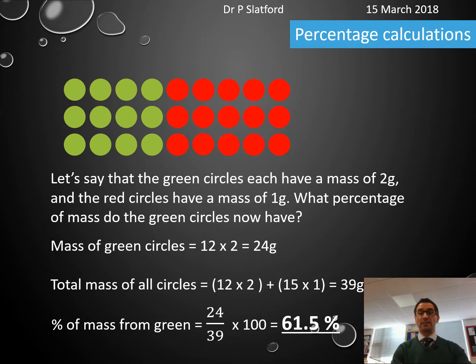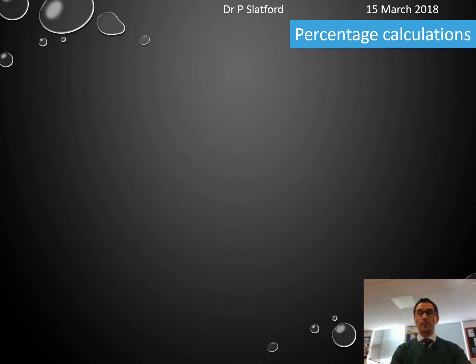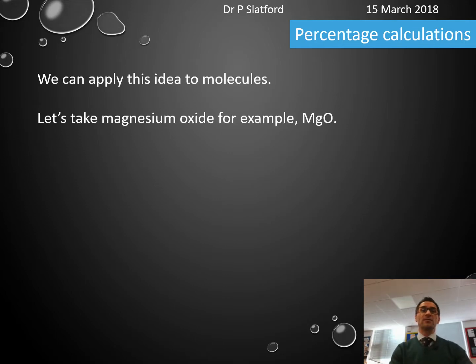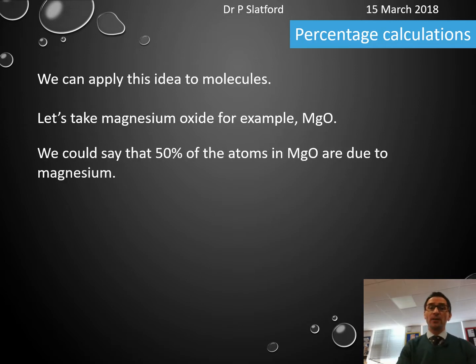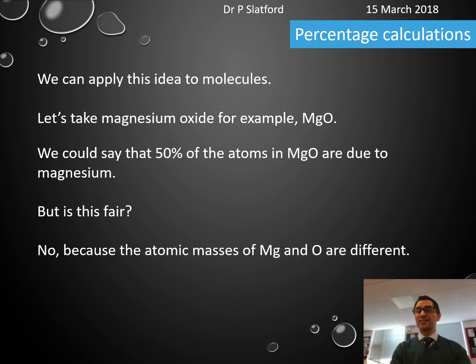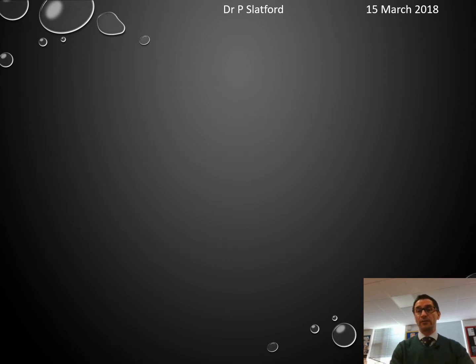We can apply this idea to molecules. Let's take magnesium oxide (MgO) as an example. We could say that 50% of the atoms in MgO are magnesium, but is that really fair? No, because the atomic masses of magnesium and oxygen are different, so we need another way of calculating it.